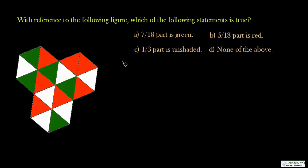The question says with reference to the following figure which of the following statements is true and then you are given four options. So you can see that we have in this figure three hexagons one, two, three, and hexagons are again broken into equal triangles. So let us study the first option.